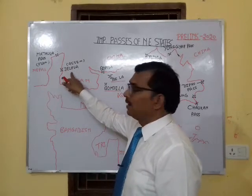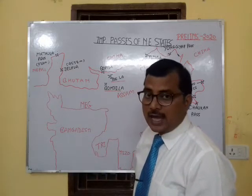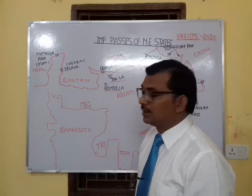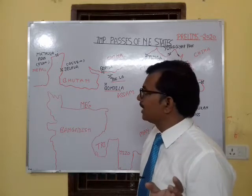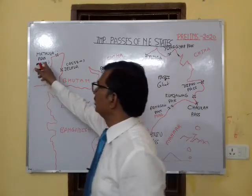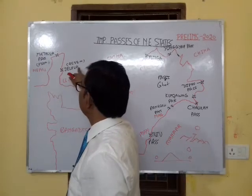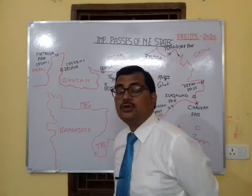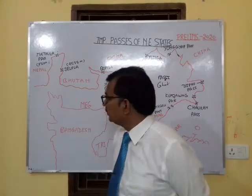The second is Jelep La Pass, also situated in the Sikkim region. It connects India to China and opens into the Chumbi Valley. Both of these are highly elevated passes — Nathula has a height of 4,310 meters and Jelep La has 4,538 meters. During winter season, they remain frozen.